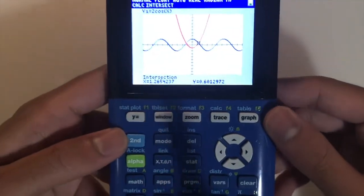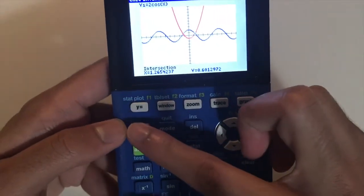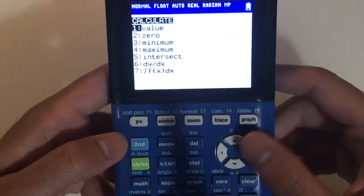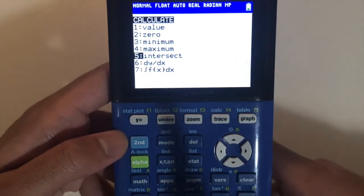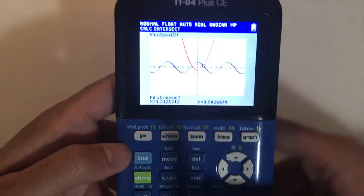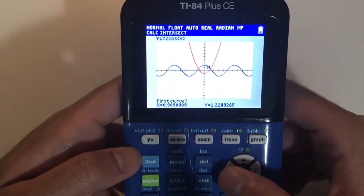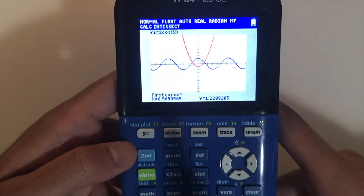So once again, to find a point of intersection, you want to press second, trace, and then scroll down to five intersect. And is this one of our curves? Yes, so press enter.